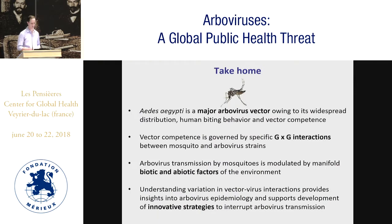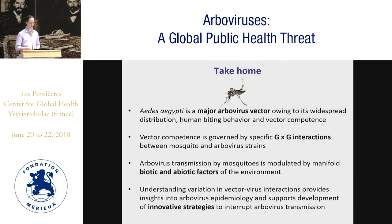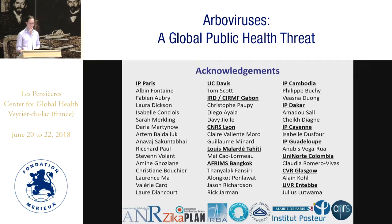The take-home messages are that Aedes aegypti is a major arbovirus vector due to its widespread geographical distribution, high human biting rate, and high vector competence. Vector competence depends on specific genotype-by-genotype interactions between the mosquito and virus strains, and is also modulated by various biotic and abiotic environmental factors. Understanding variation in these vector-virus interactions provides important insights into epidemiological patterns of arbovirus transmission and supports development of novel strategies to interrupt transmission within mosquito vectors. I'd like to thank members of my lab, collaborators in Paris and around the world, and the funding agencies.